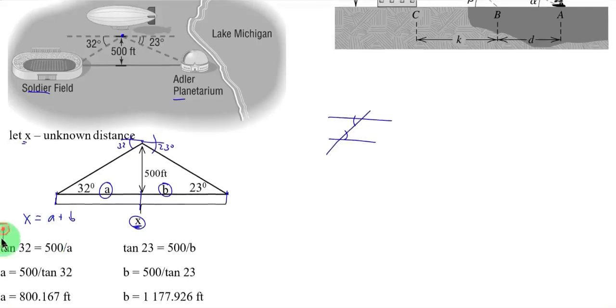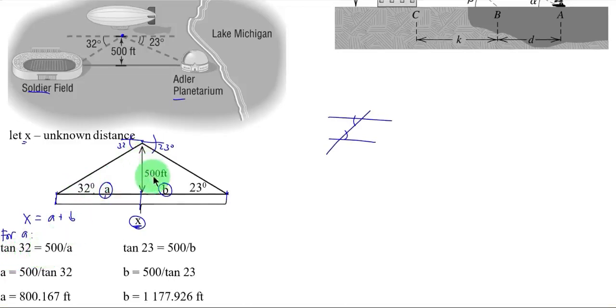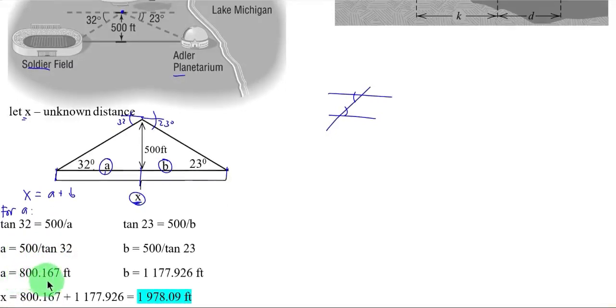So here we are going to solve for a. So now if you are going to solve a, that is again the adjacent and the opposite of your angle 32 degrees. So we can use again tangent. So tangent 32 equals 500 over a. So solving a here, we have 500 over tangent of 32, or that is simply 800.17 feet.